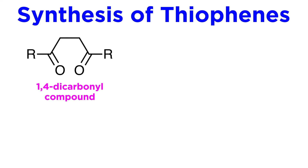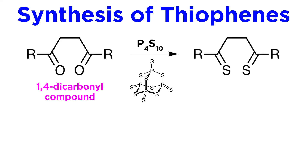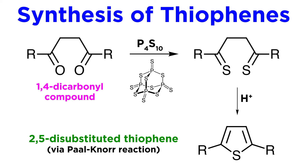Interestingly, thiophenes are prepared identically to the technique we learned for furans, starting with a 1,4-dicarbonyl compound, then simply replacing the oxygen atoms with sulfur atoms through sulfurization with P4S10 to generate the thiocarbonyls. From there, acid catalysis prompts the same mechanism we learned to generate furans.